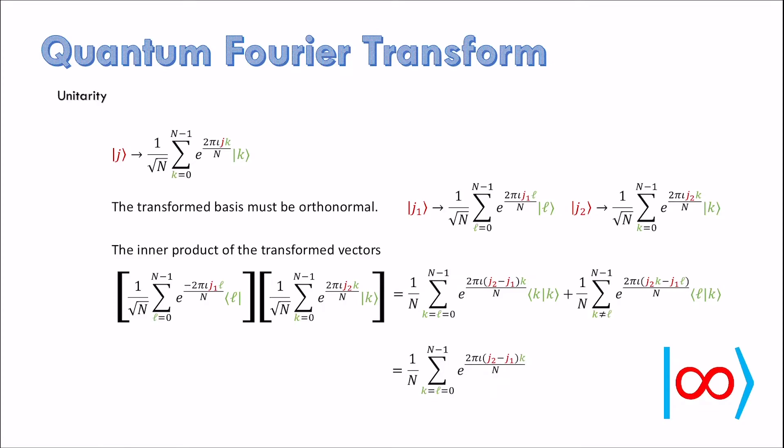I leave it for you to verify that the following geometric sum is 0 when J1 is not equal to J2 and 1 when they are equal. This shows that quantum Fourier transform takes orthogonal states to orthogonal states and their norm is 1. Hence quantum Fourier transform is allowed by quantum mechanics.